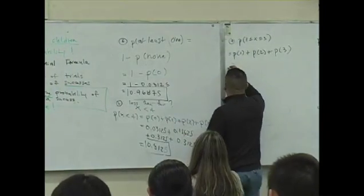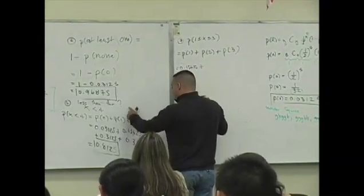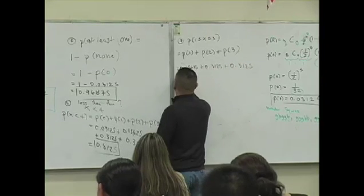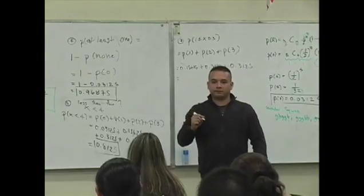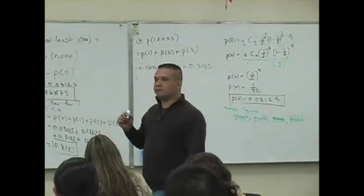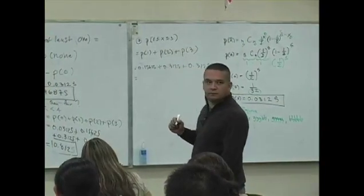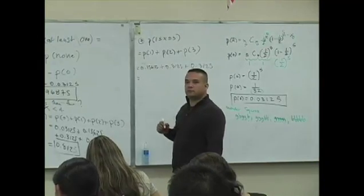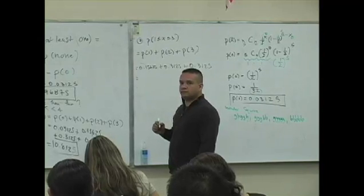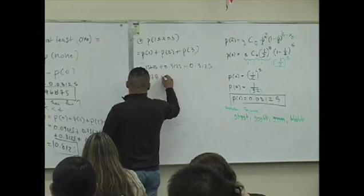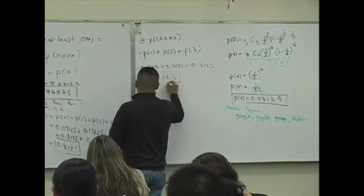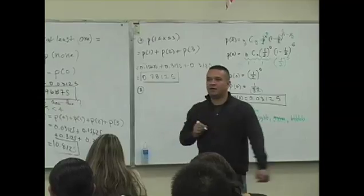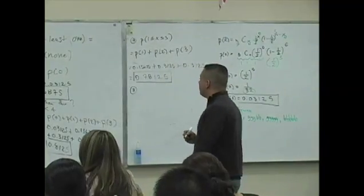Here it is. 0.15625 plus 0.3125 plus 0.3125 and what do you get as an answer? What do you guys get? 0.1, 0.78125. 0.78125. 0.78125. That's between 1 and 3.